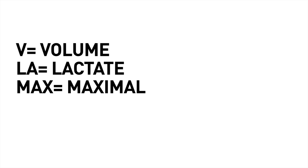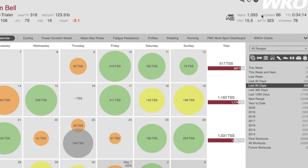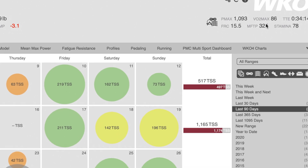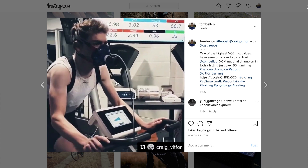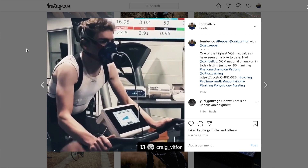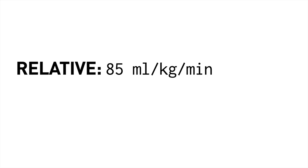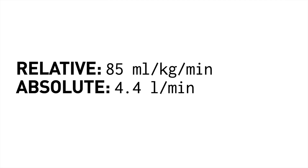You'll see similar terms used in other areas of training and performance, such as VLA max, where the O2 or oxygen part is simply replaced with LA, which refers to lactate, to represent the maximum lactate building rate — something we'll talk about in a future video. Whether your VO2 max is estimated from power data using a program like WKO5, from lactate data with something like Inscyd, or via direct measurement in a cardiopulmonary exercise test, your maximal oxygen uptake or aerobic capacity can be expressed as both a relative and absolute result — e.g. 85 millilitres of oxygen per kilogram of body weight per minute, or perhaps 4.4 litres of oxygen per minute respectively.